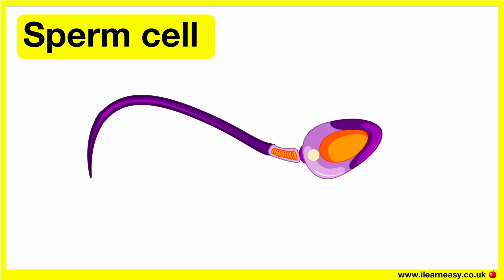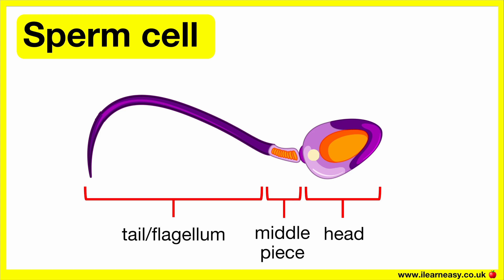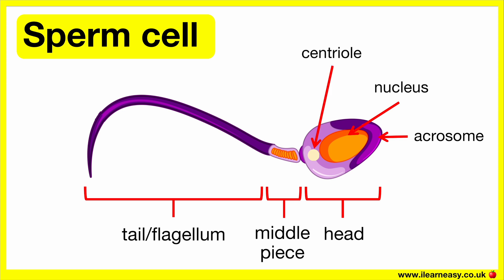Now let's look at the different parts of a sperm cell: the head, middle piece, tail or flagellum, acrosome, nucleus, centriole, and mitochondria.